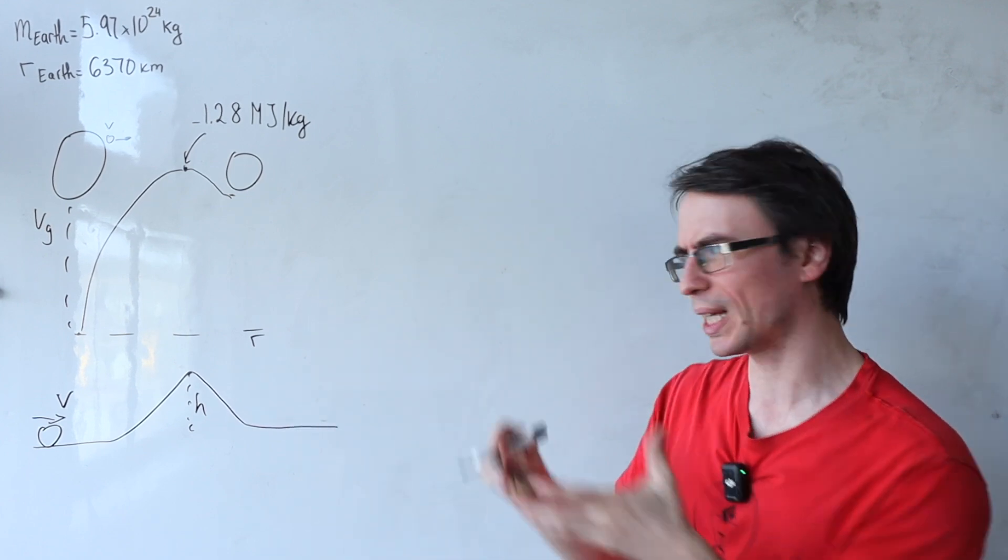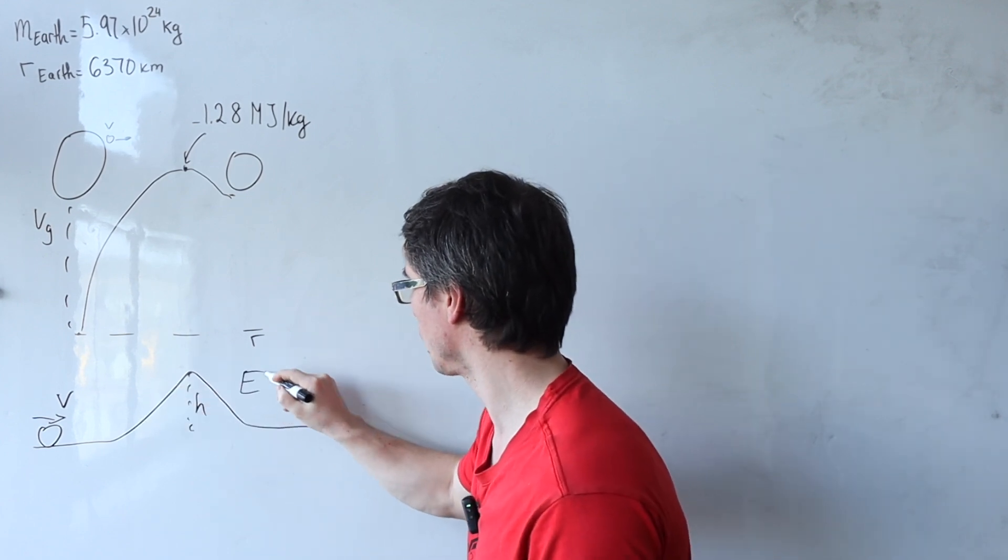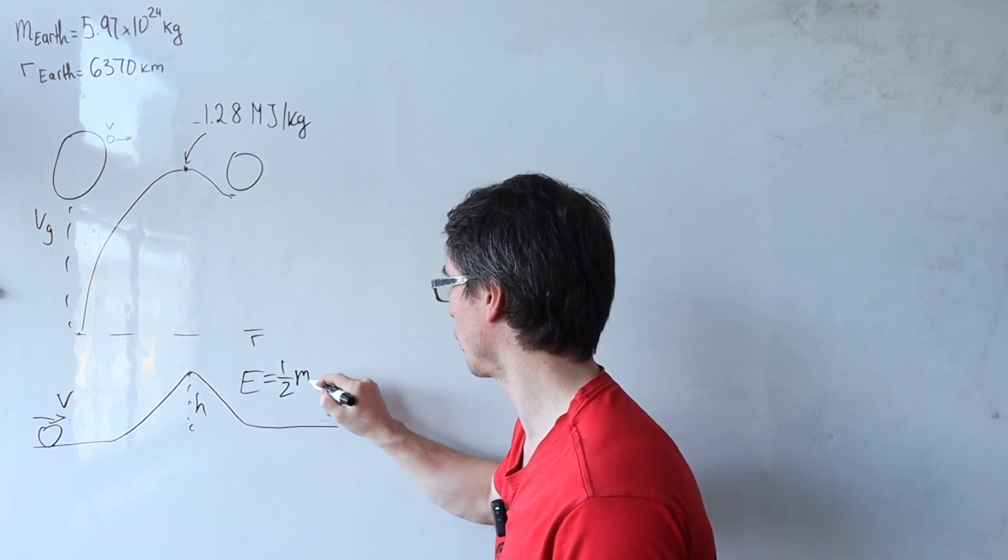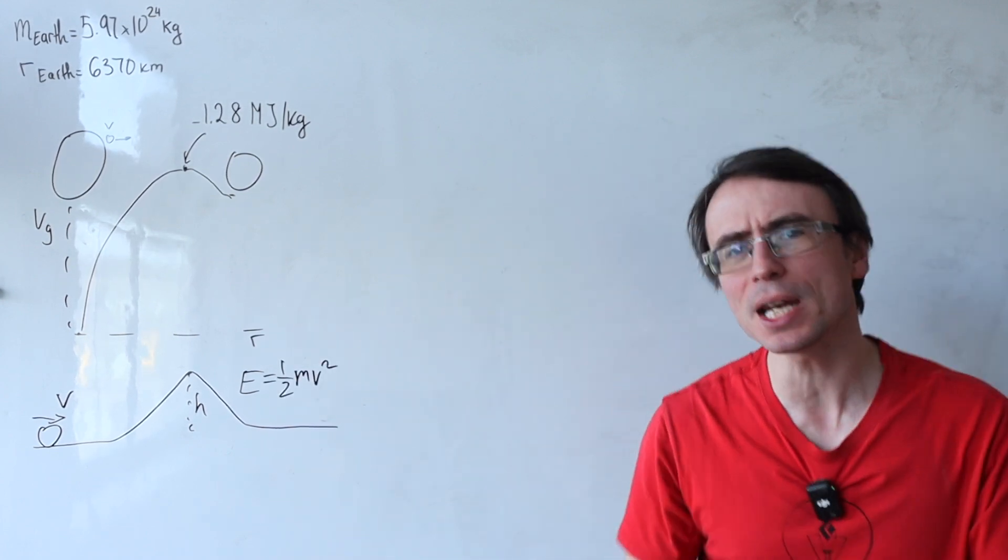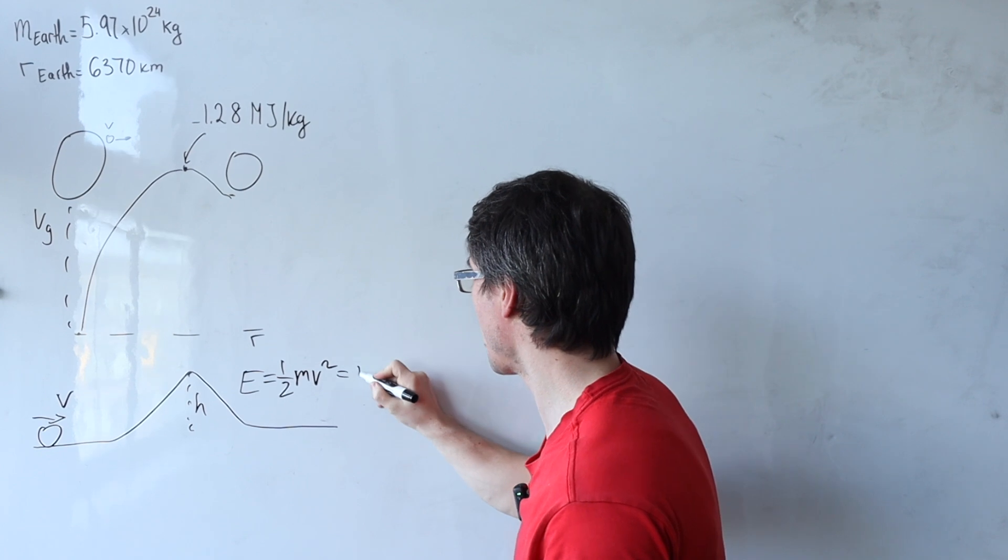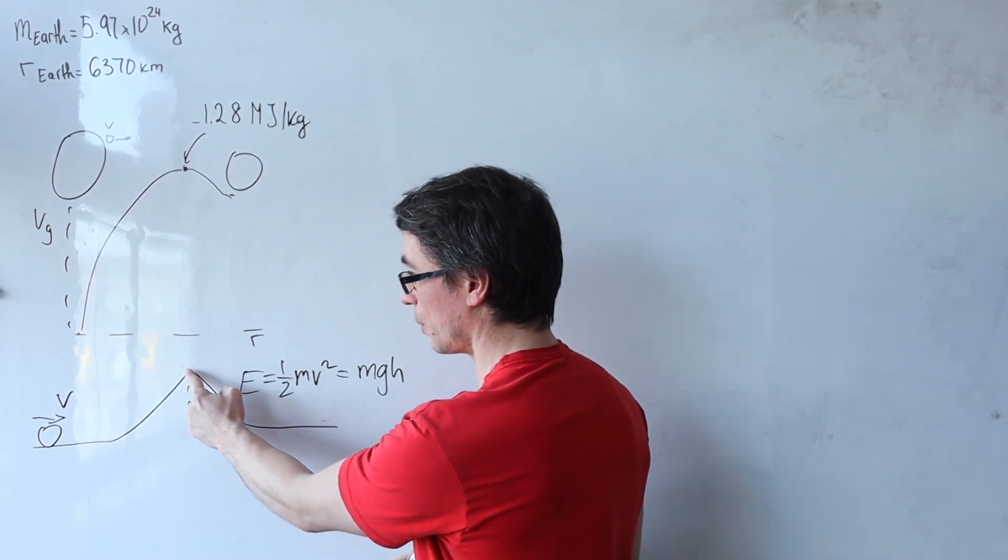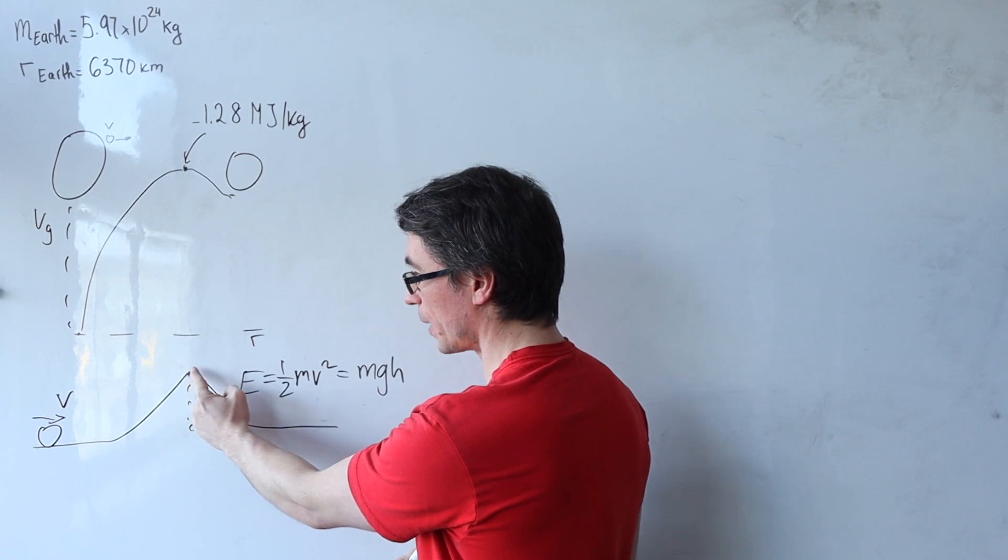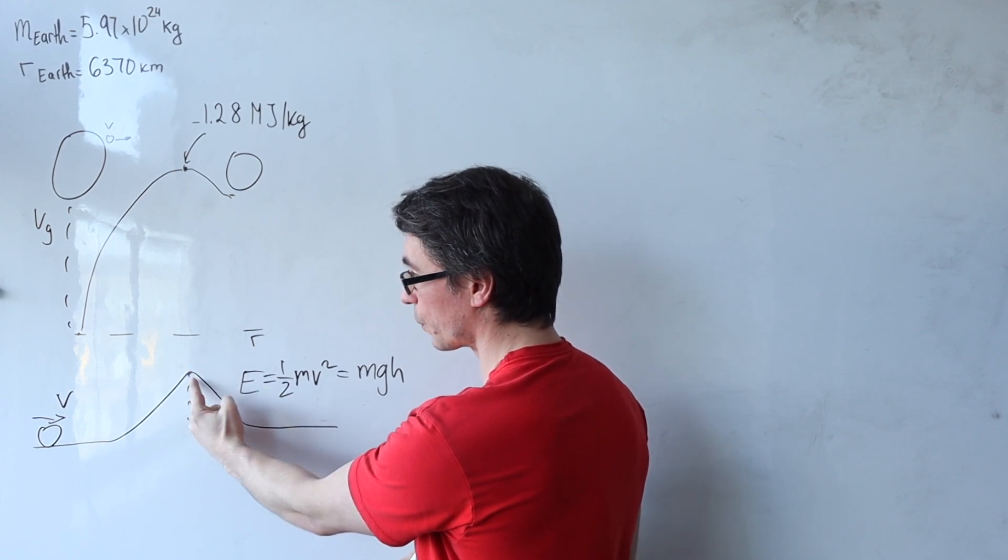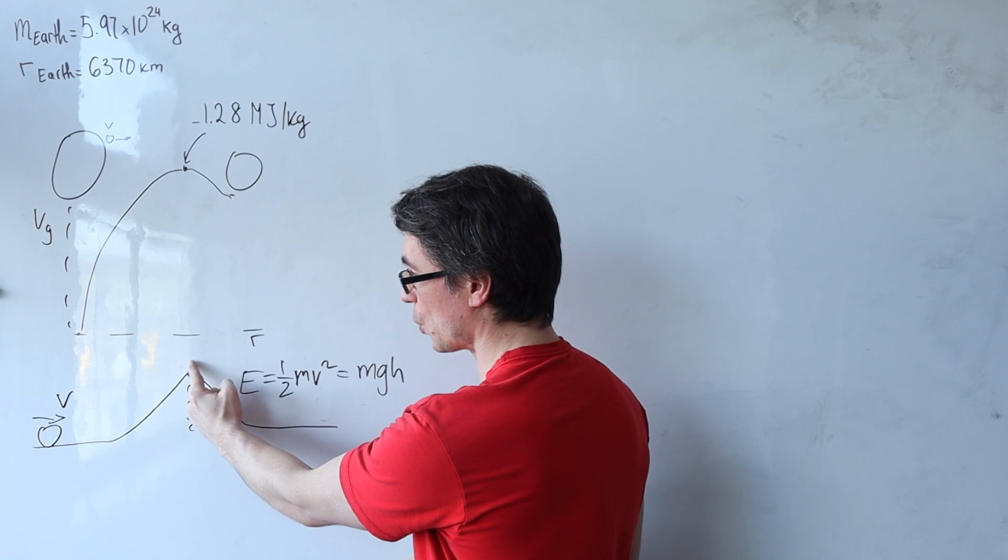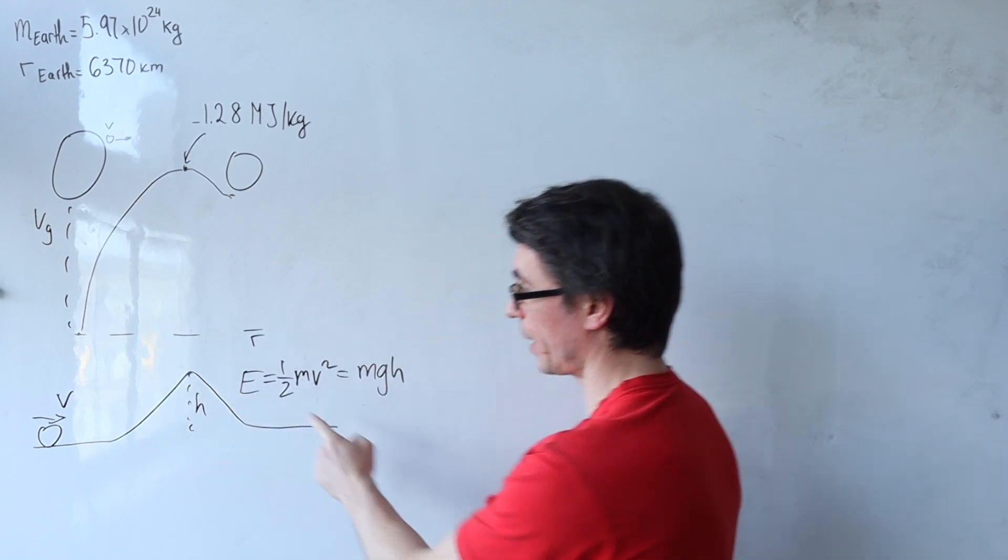then we could just use the kinetic energy of the ball. E equals a half mv squared has to be at minimum equal to mgh. If it goes above that value, the ball will have enough energy to not have zero speed at this stage and is going to roll down the hill.